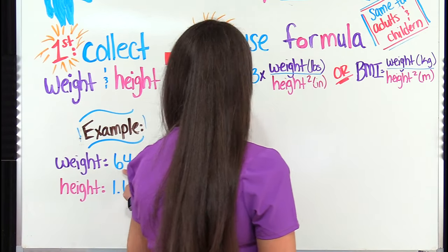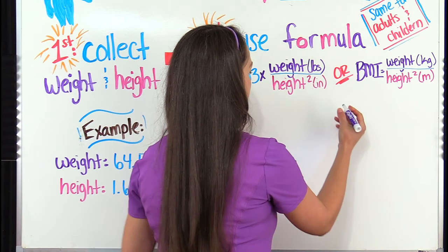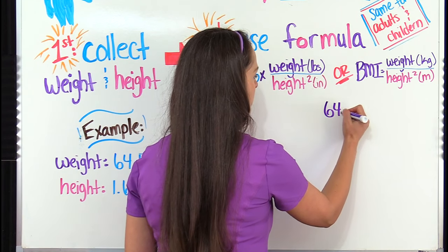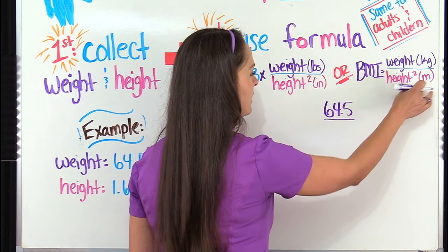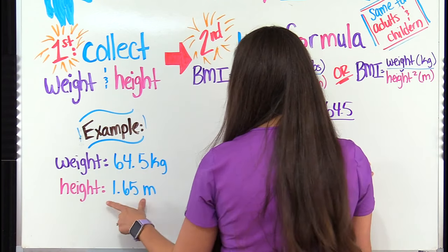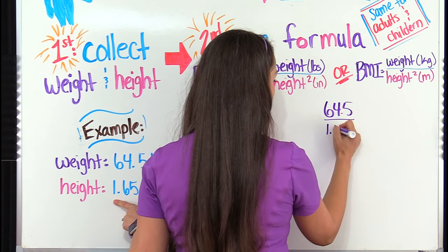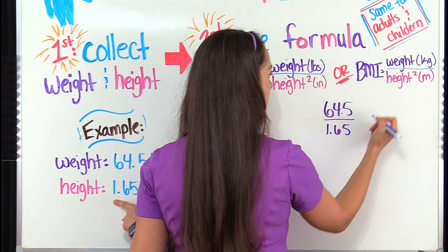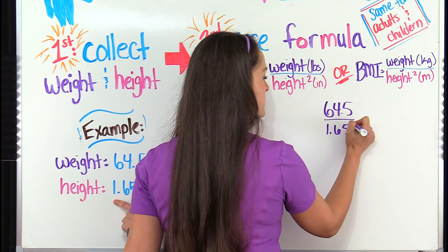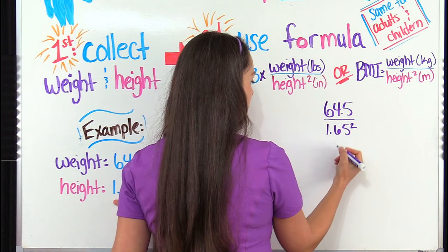So our patient's weight in kilograms is 64.5. Our height is in meters and they have a height of 1.65 meters. And remember don't forget to square. So we're going to square it. So let's go ahead and square that out.